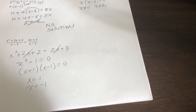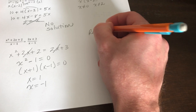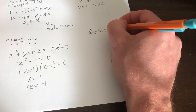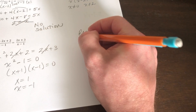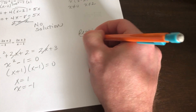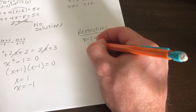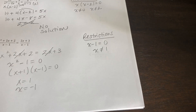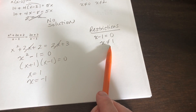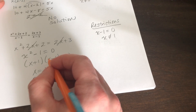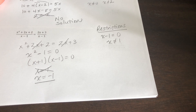Now we go through and do our restrictions. Our denominator is x minus 1, set equal to 0, so x cannot equal 1. Checking our answers, x equals 1 falls into a restriction, so we cross it out. The only answer is x equals negative 1.